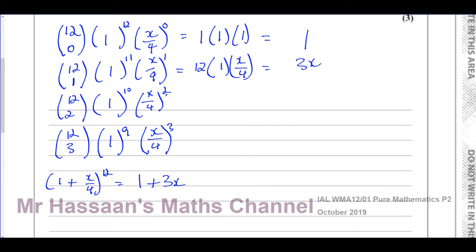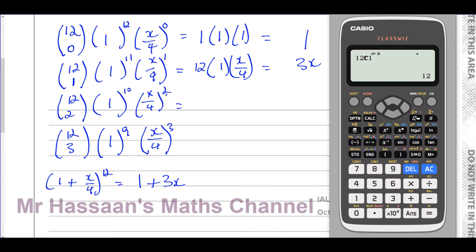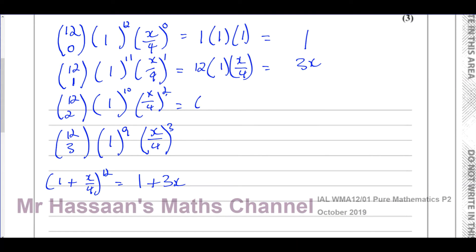For the third term, 12C2: change the value to 2 on the calculator, which gives 66. Then 1^10 is 1, and (x/4)^2 is x²/16. So 66 times x²/16 simplifies to 33/8 x². The third term is +33/8 x².